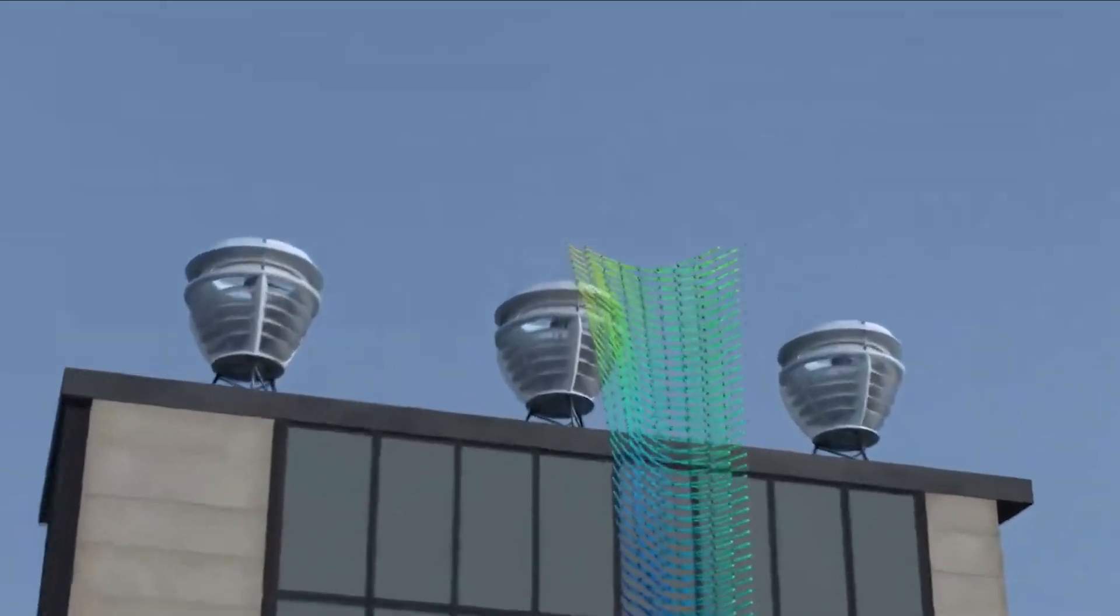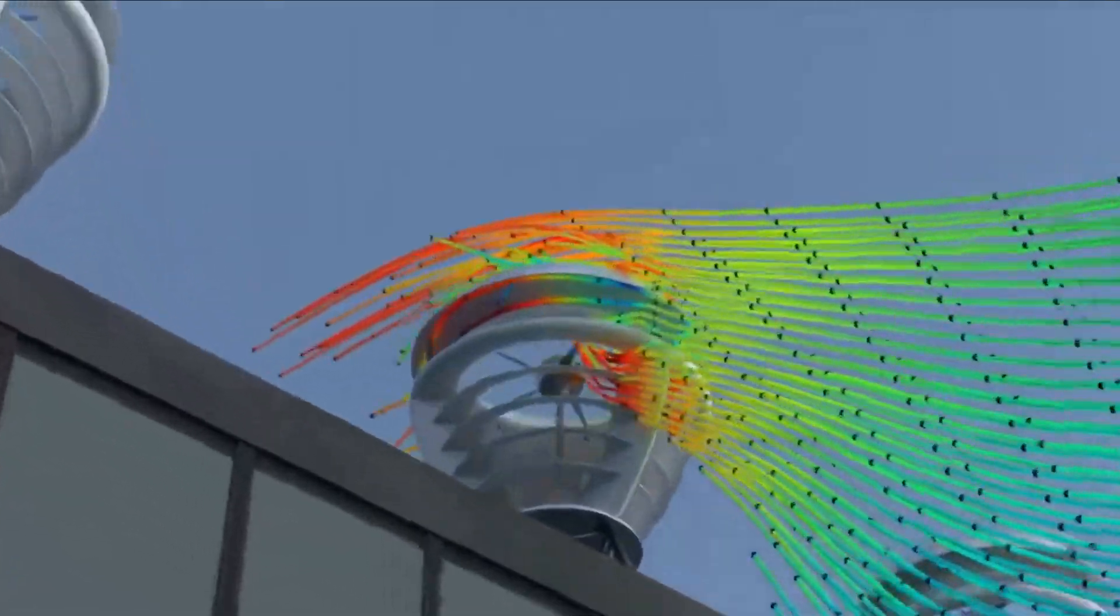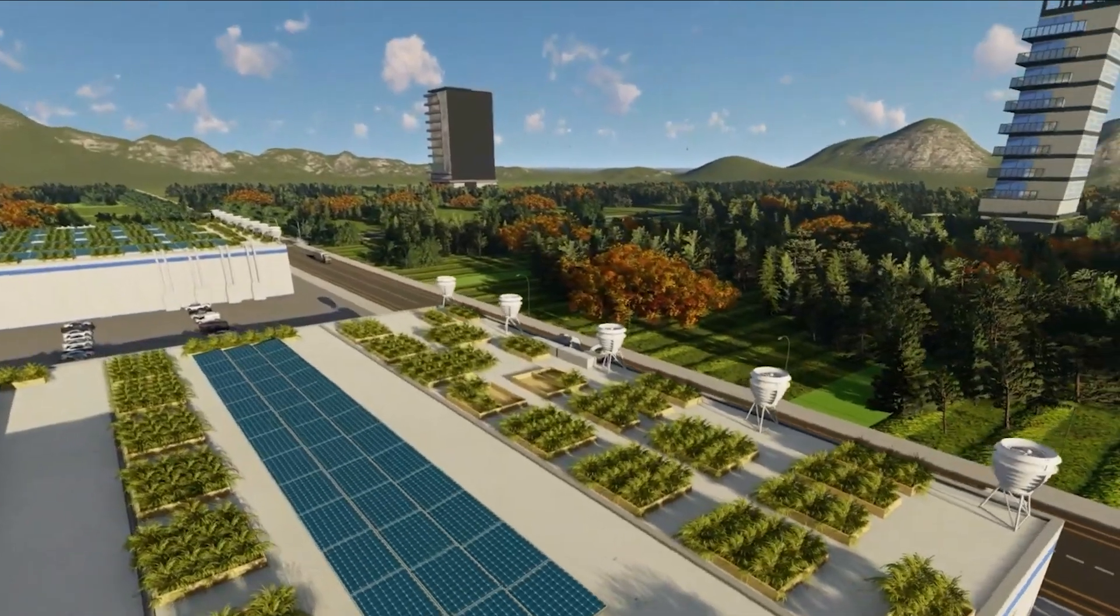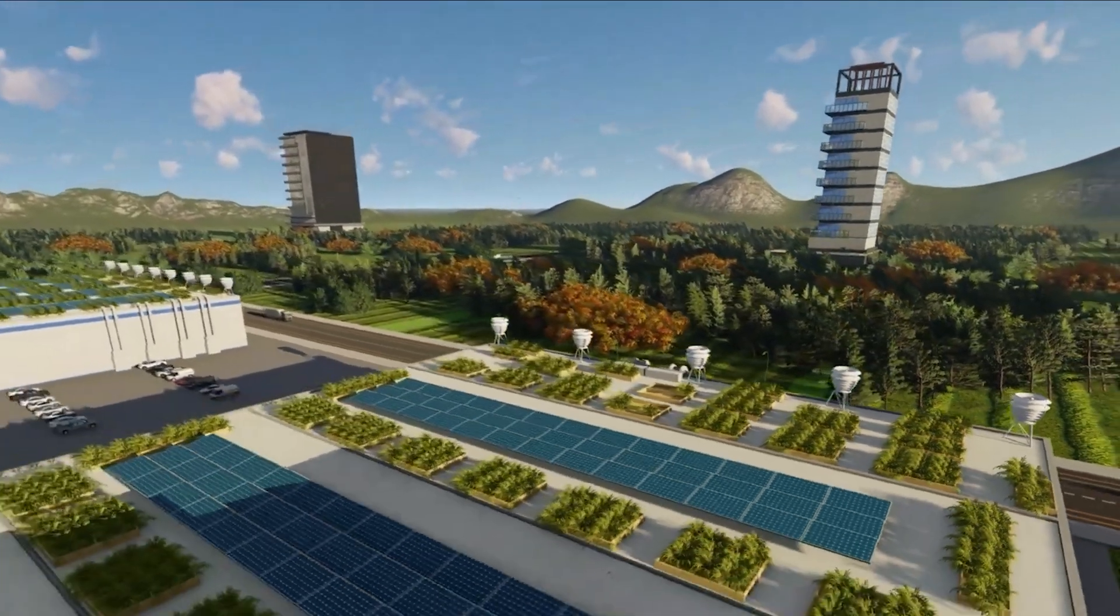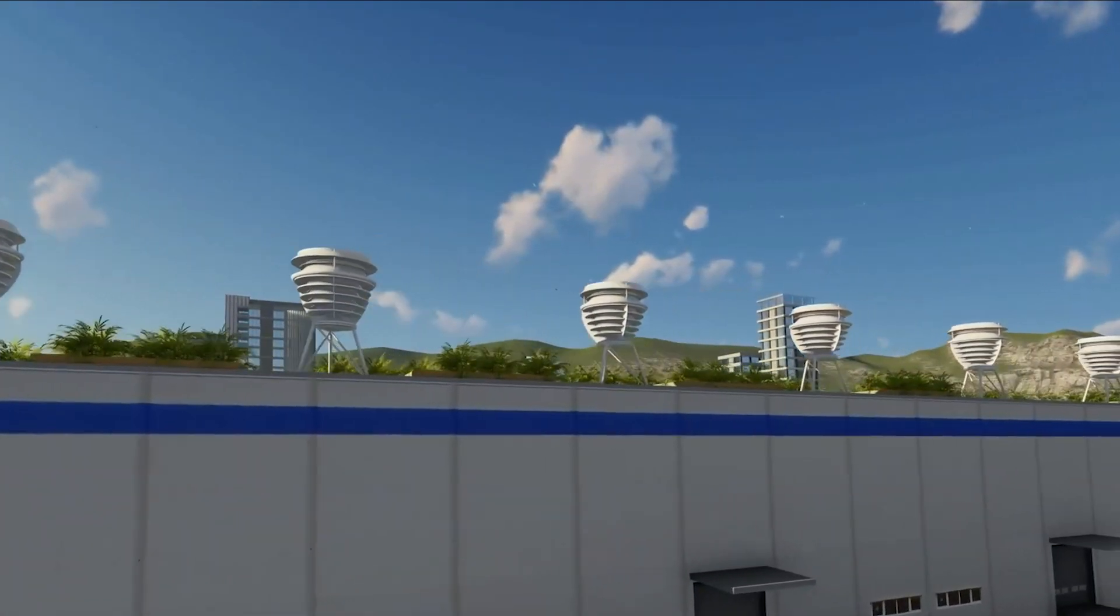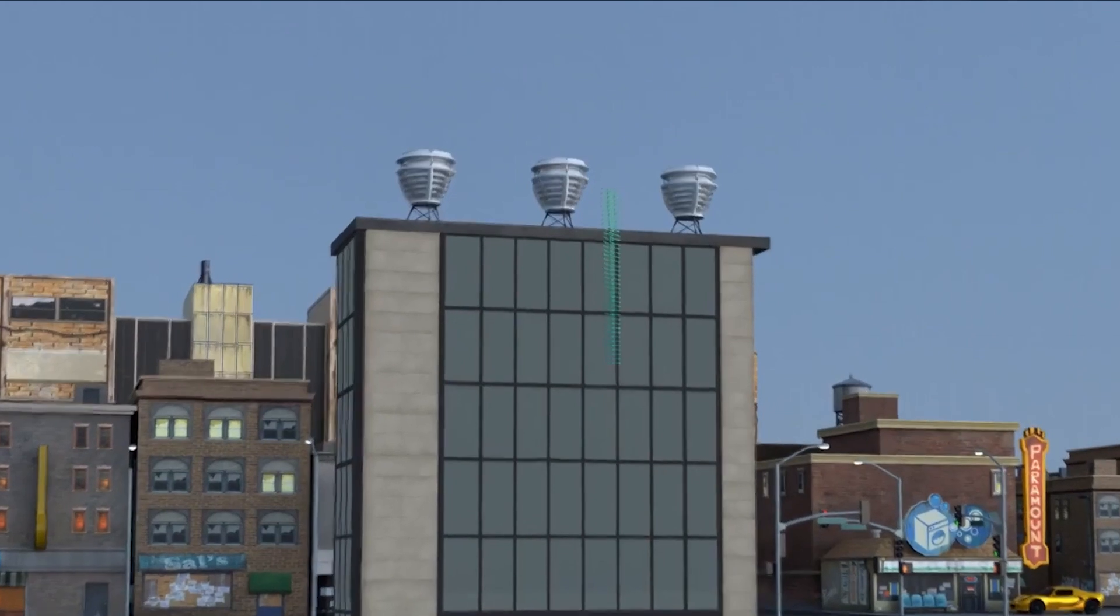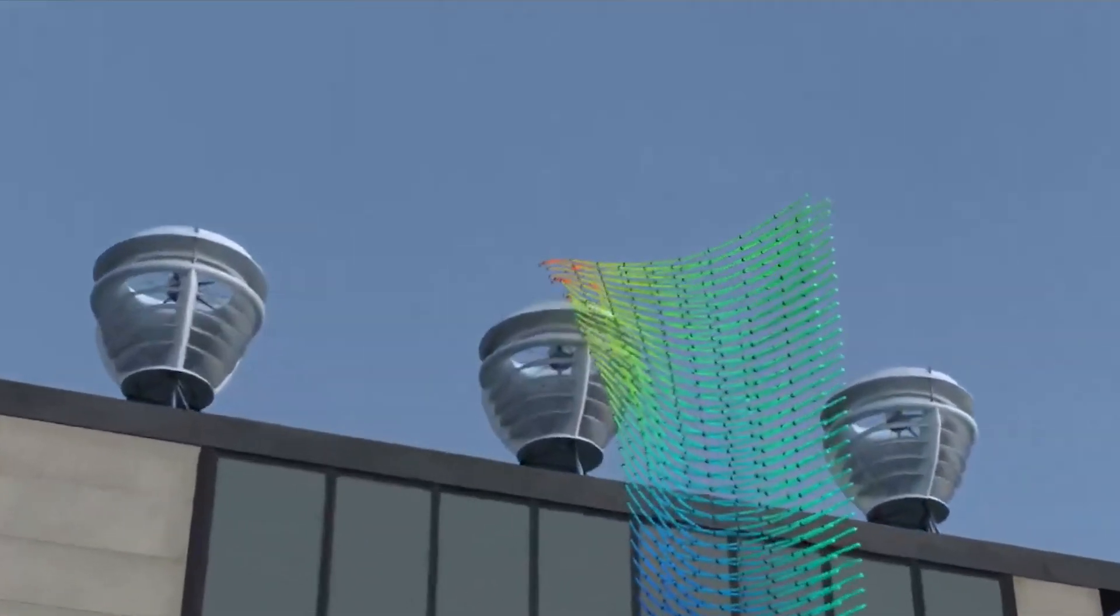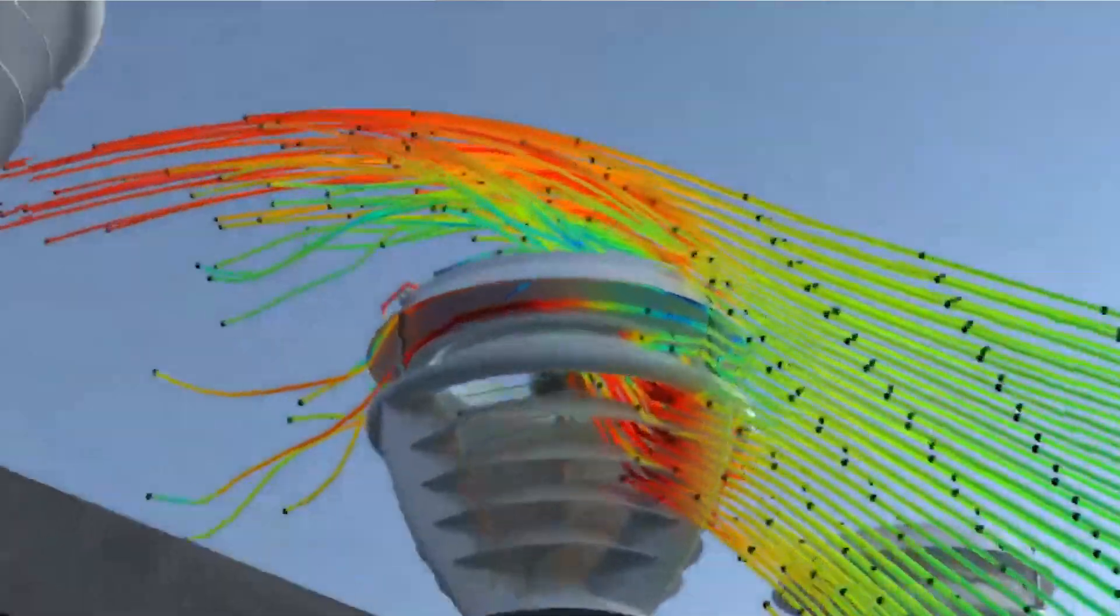One of the most notable aspects is its shrouded design, a Diffuser Augmented Wind Turbine that features a unique shroud around the turbine body. This shroud accelerates wind flow, allowing more air to pass through the turbine, which significantly enhances power output.